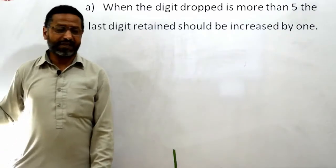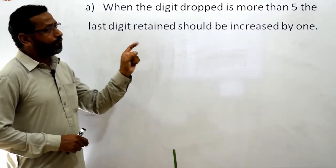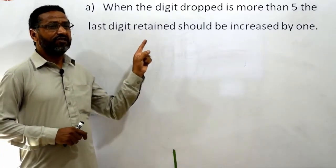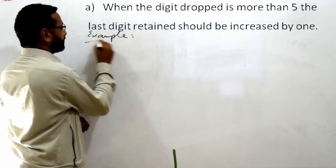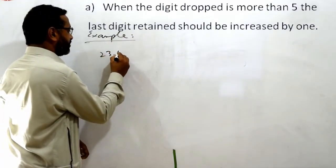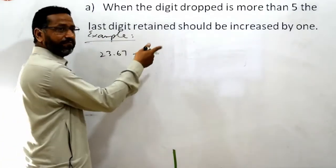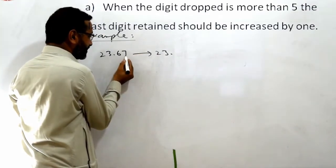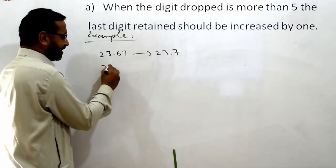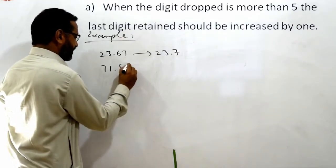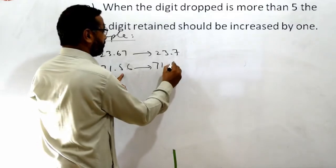Rounding off data کرنے کے لیے سب سے پہلا rule: When the digit to be dropped is more than 5, then the last retained digit should be increased by 1. Example: 71.56 — اگر آپ 5 کو drop کریں تو یہاں پہ 1 add ہو جائے گا، یہ 6 بن جائے گا.